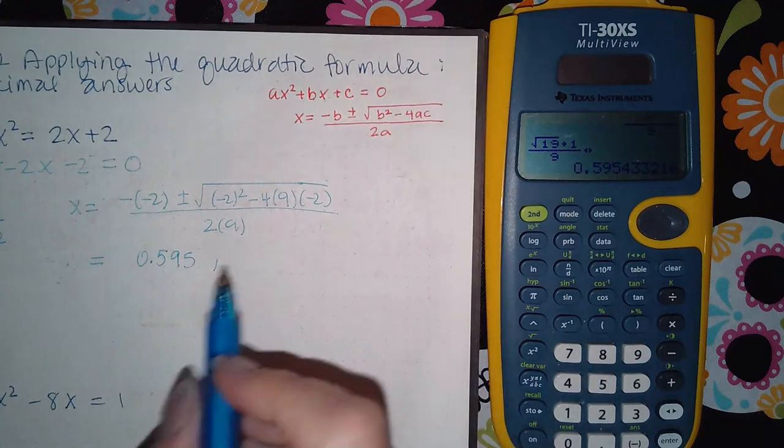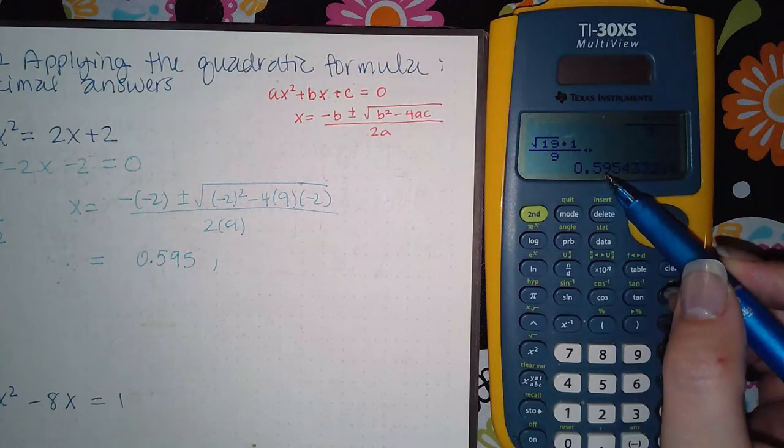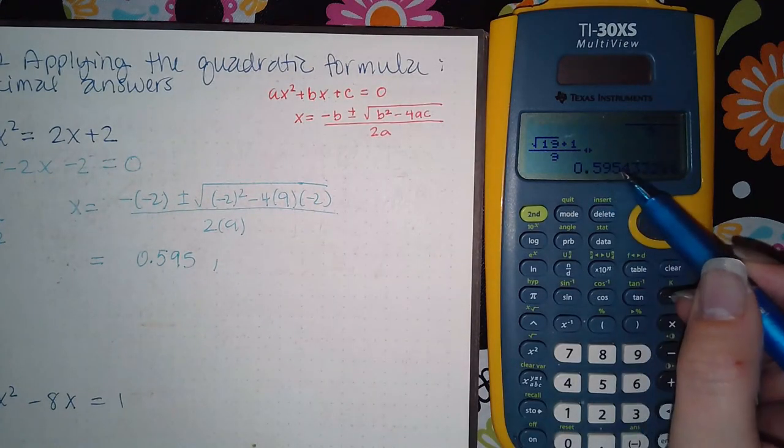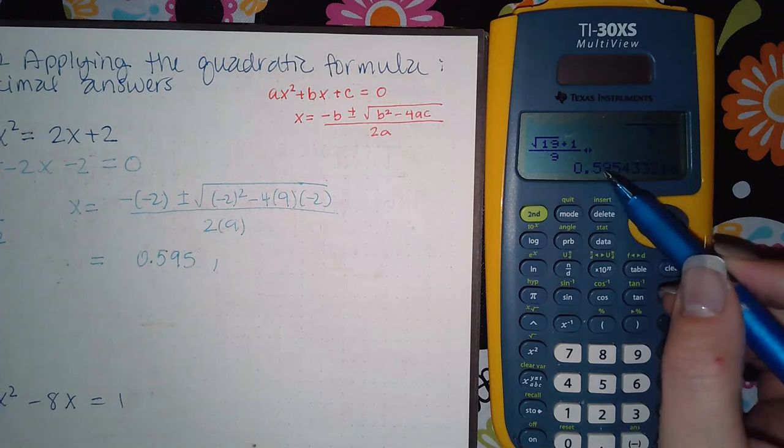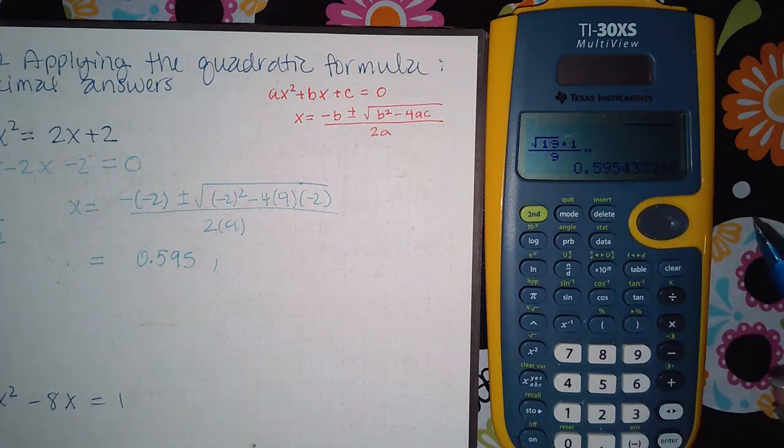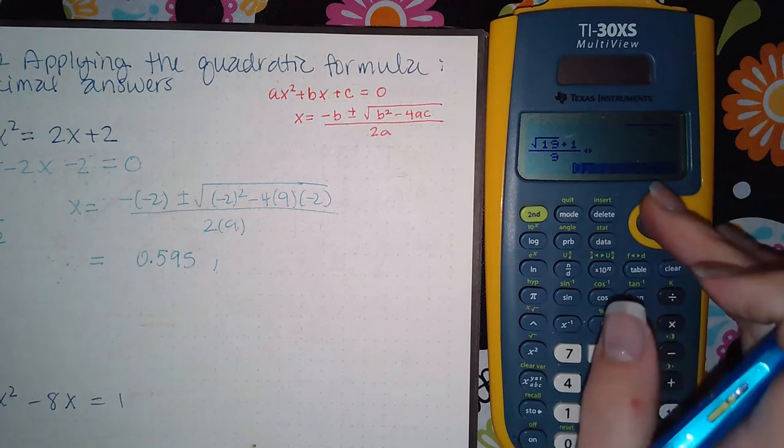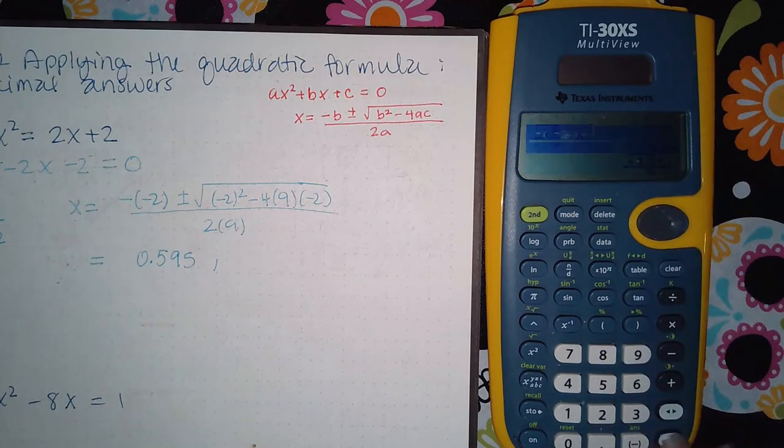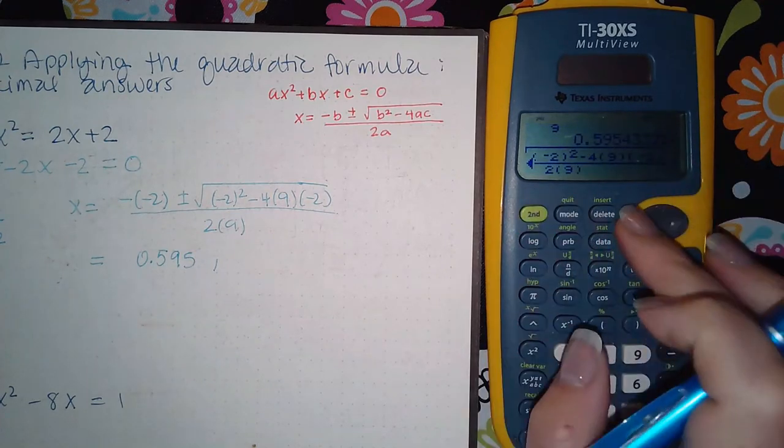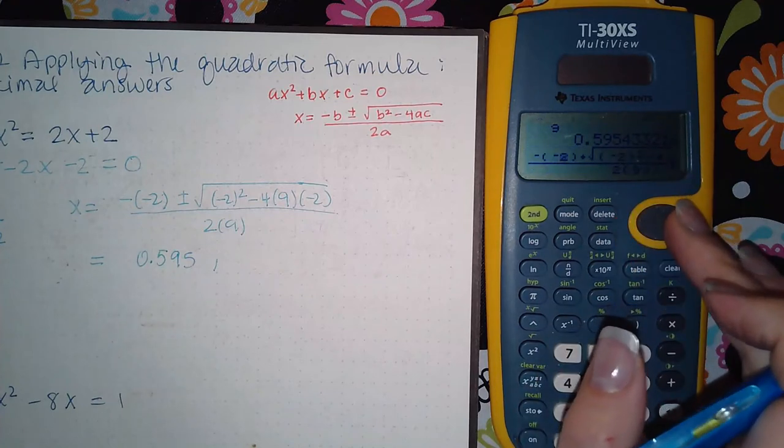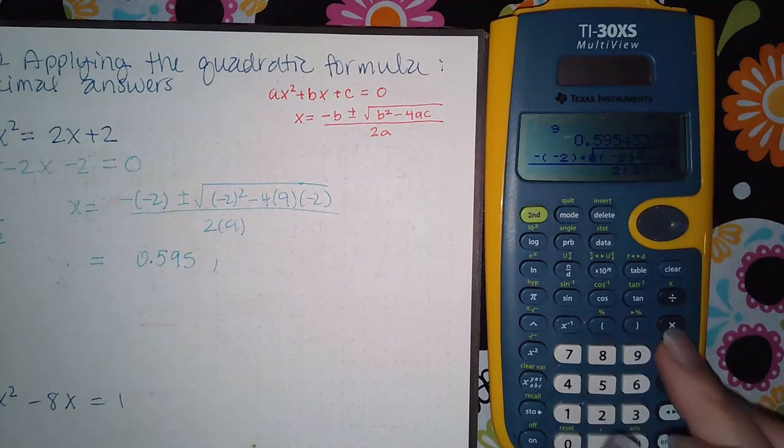If it had told me to round to the second decimal place it would actually be 0.60 because the 5 would change the 59 to a 60. Now we're going to do the same thing again but this time with the minus in the middle. So I'm going to copy that and then I'm just going to change that plus into a minus sign.